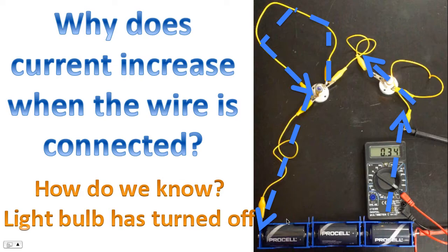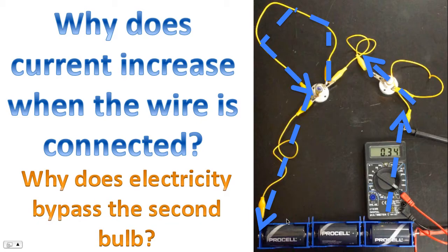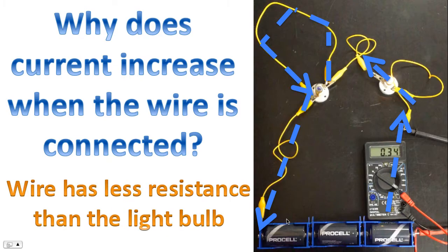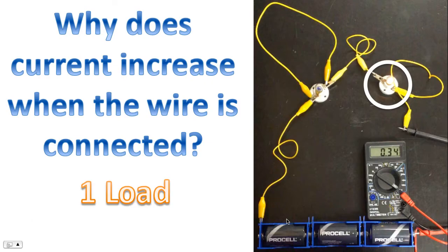So how do we know this path is correct? Well, the light bulb has effectively turned off. So the question is, why does electricity bypass the second bulb? Remember, electricity always takes the path of least resistance. The wire has less resistance than the light bulb.